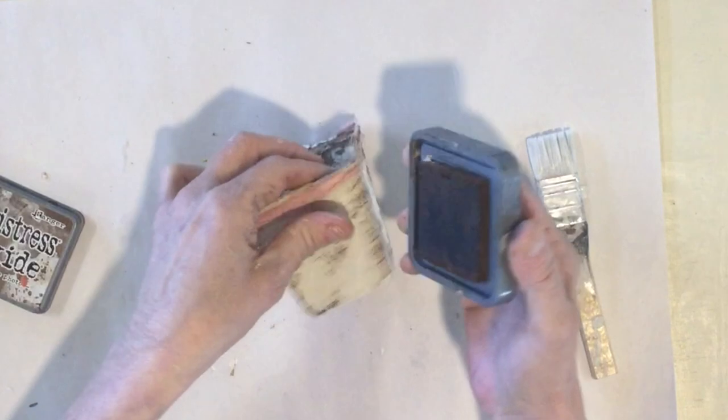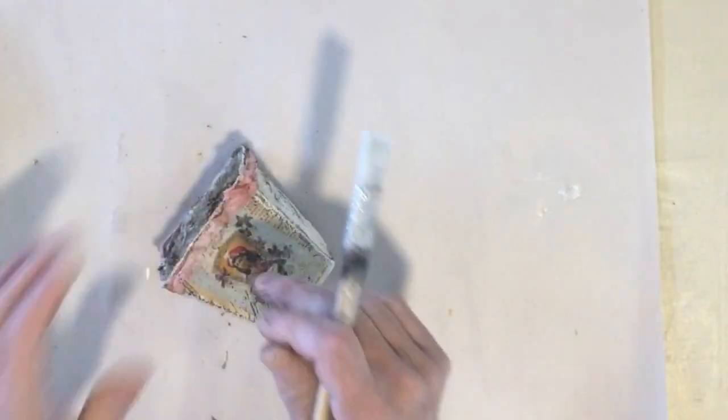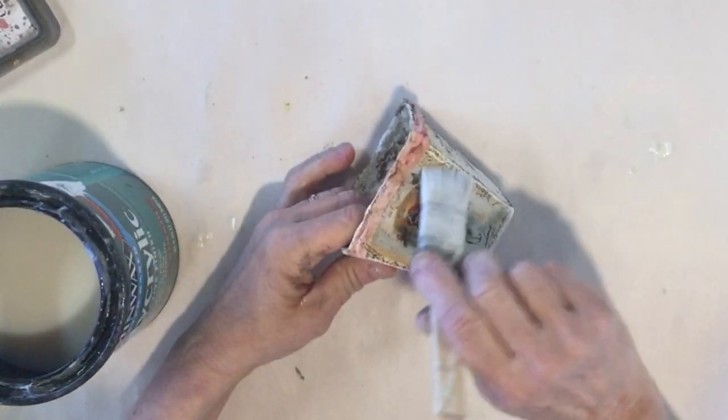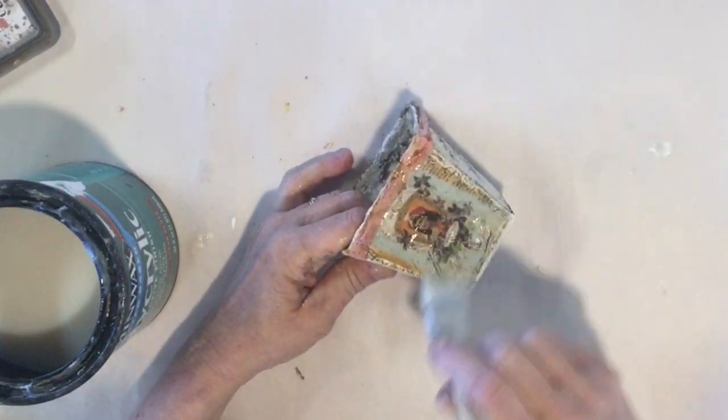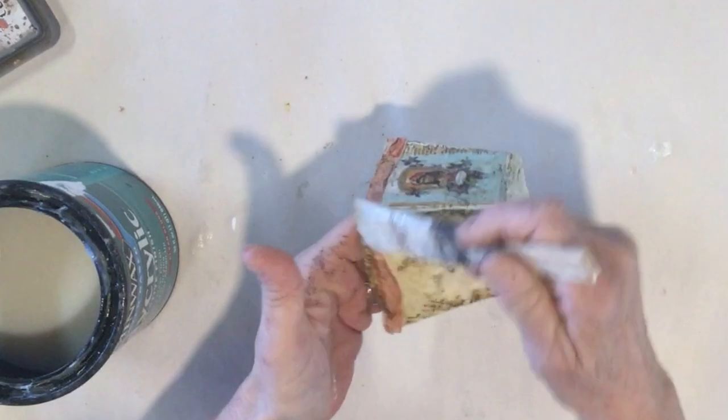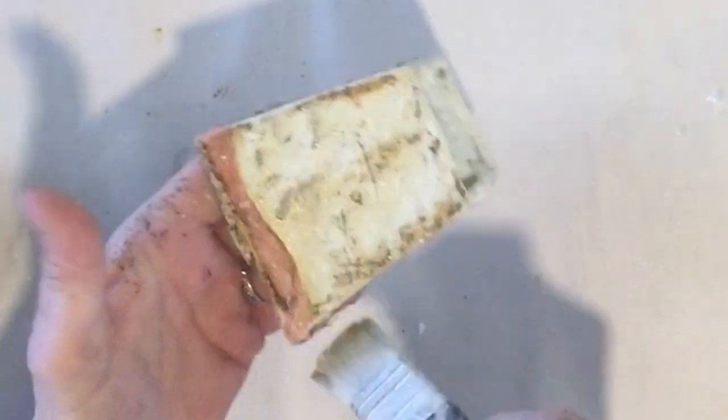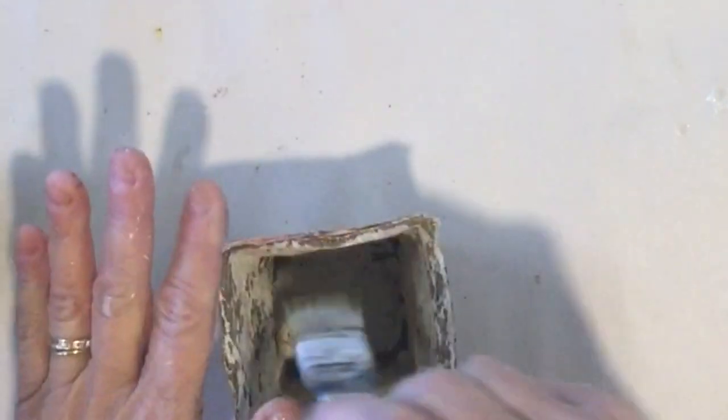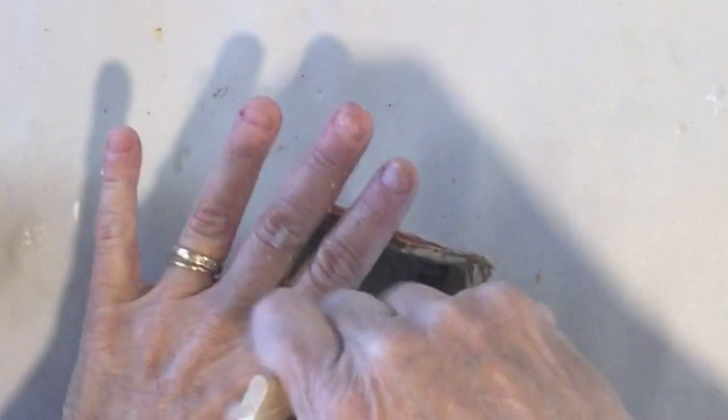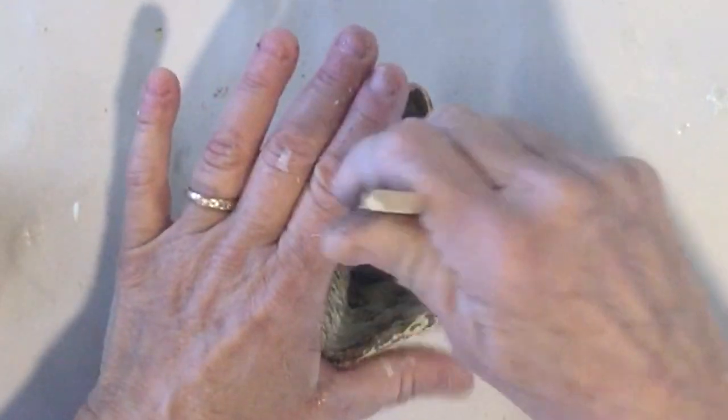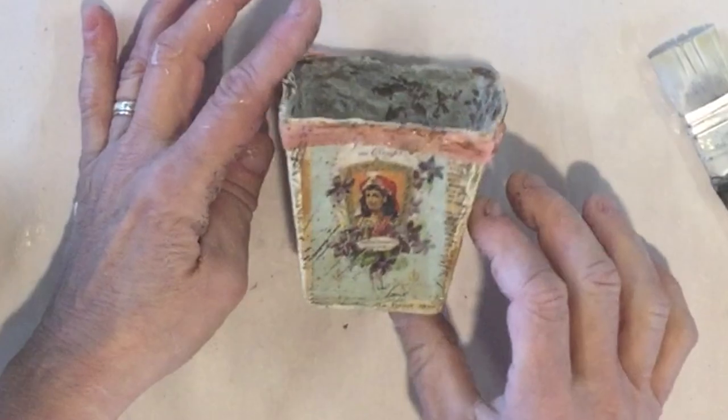I'm even going to add a little more distressing ink to my ribbon. And I am going to seal this with my Minwax polyacrylic. It's just a crystal clear and you could use any type of sealer you would like. I just want all of it sealed and this will also move around my distressing ink. If you would like, you could do the inside and I'm just going to quickly swipe this over the inside edges and we'll let this dry.